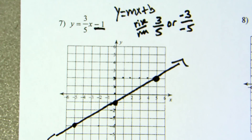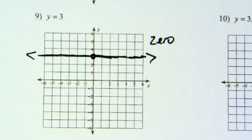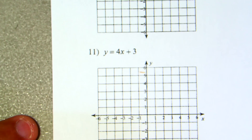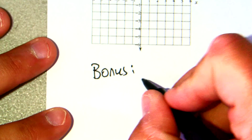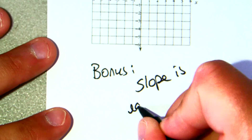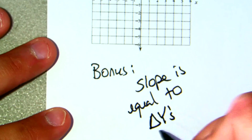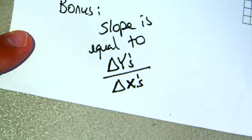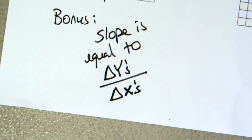To recap: negative 1 is our y-intercept and our slope is three-fifths. For a bonus on the test tomorrow, I want you to know that slope equals delta y over delta x — the change in y's over the change in x's. Write delta y over delta x on the test. Good luck and see you in the morning.